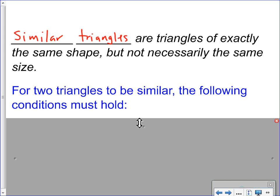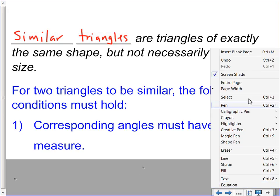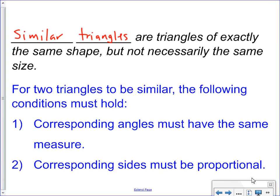For two triangles to be similar, the following must be true. Number one, the corresponding angles have to have the same measure. Number two, the size must be proportional. In other words, the ratio of the size must be proportional. The ratio should be the same for all three sides.